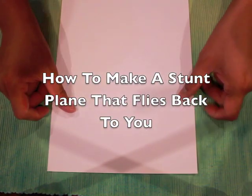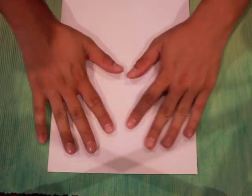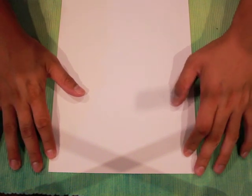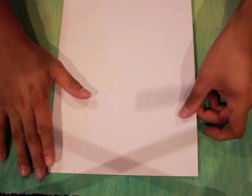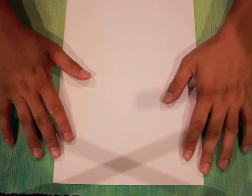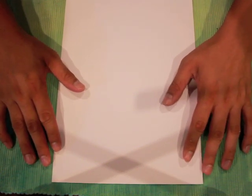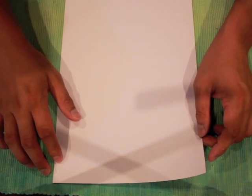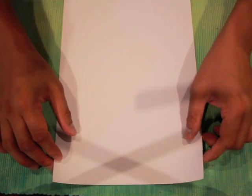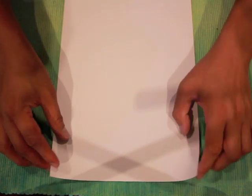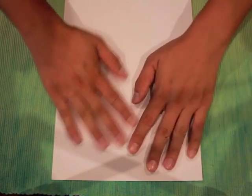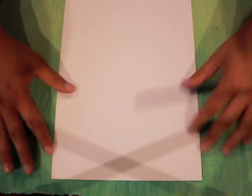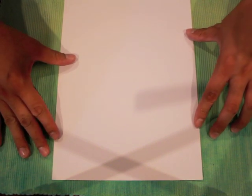Okay, so today we're going to be folding a paper airplane. This is a stunt glider airplane. It's supposed to fly in a circle and then come back to you, sort of like a boomerang airplane. So alright, let's begin to fold this plane that flies back to you.